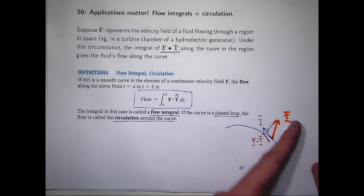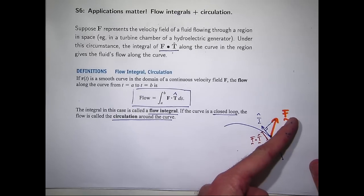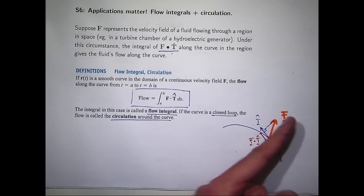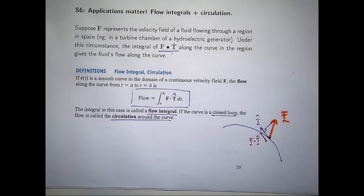And if it was pointing perpendicular to the unit tangent vector, what do you think the value of the flow integral would be? Be zero, right, absolutely. Because there's no component pushing in that tangential direction. So essentially what these things measure is the degree to which the vector field aligns with the tangent vector. That's essentially what it's measuring.